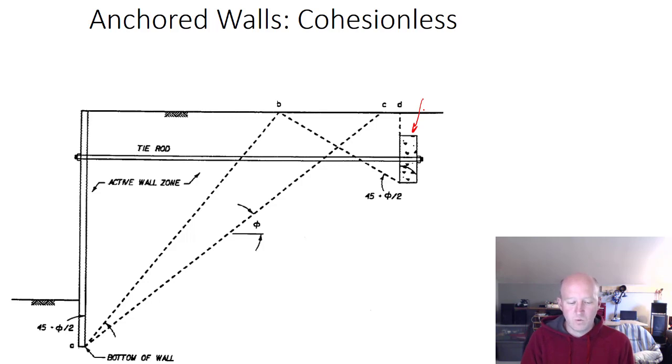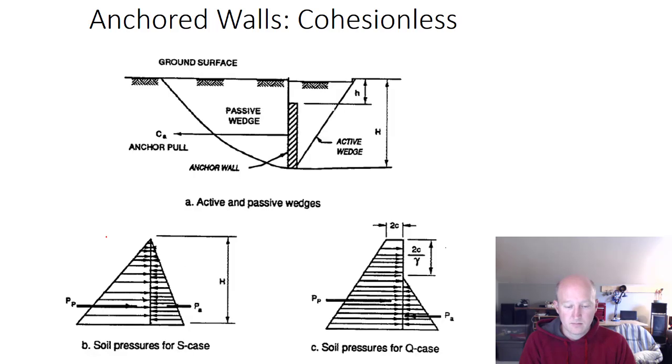I mentioned this idea of passive pressure within the soil wedge. There's some guidance on where that needs to be. This is basically the active wedge. Here is a passive wedge and they're calling out that these two had better not intersect. You need to make sure that the anchor is long enough that our passive wedge for the dead man doesn't somehow interact with the active wedge of the soil behind the sheet pile wall.